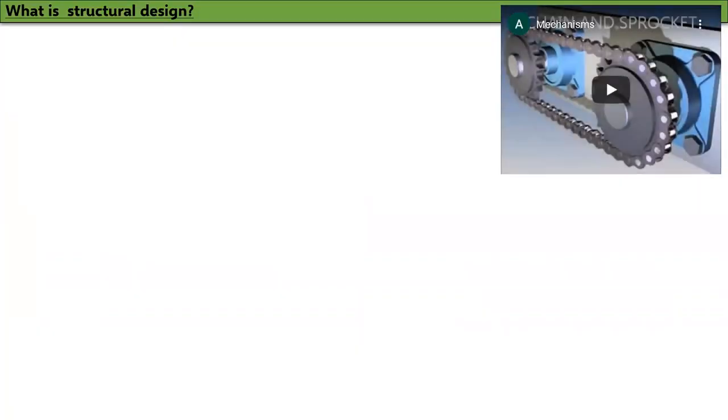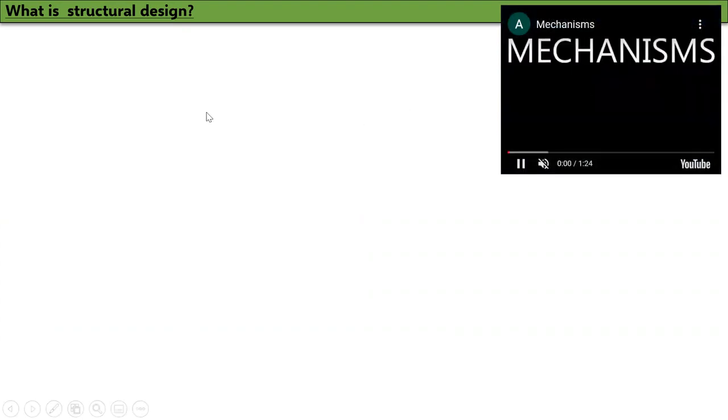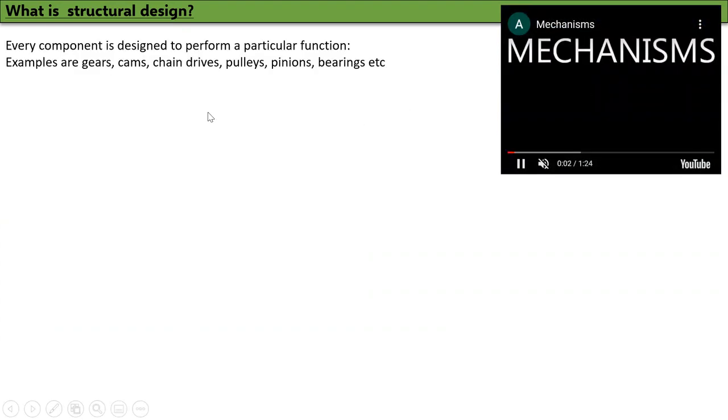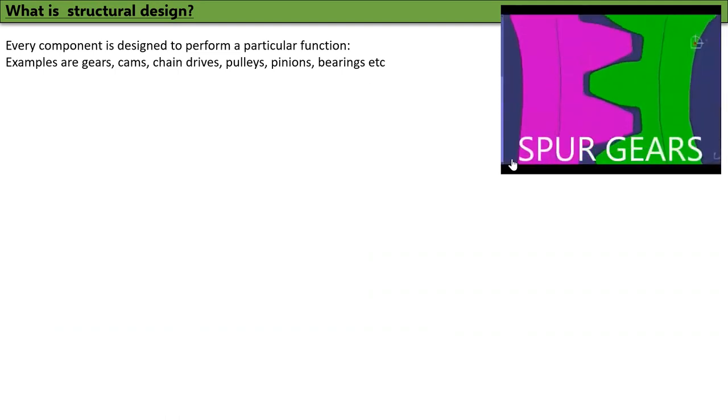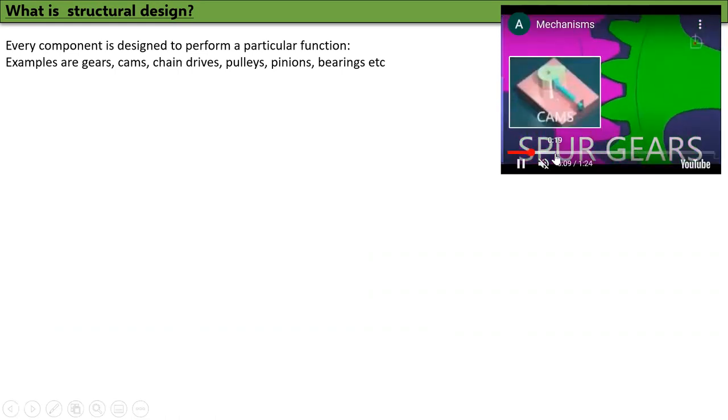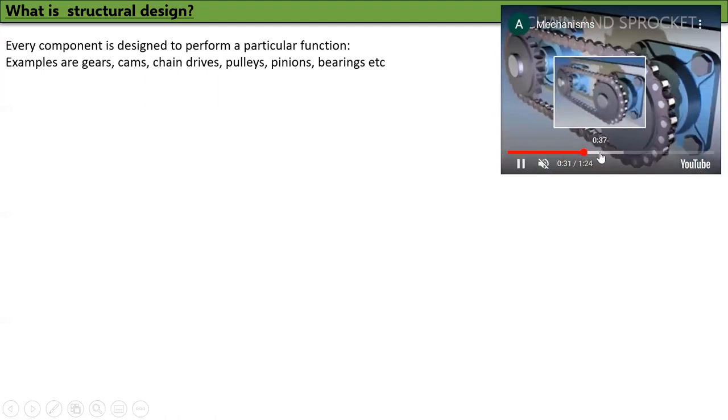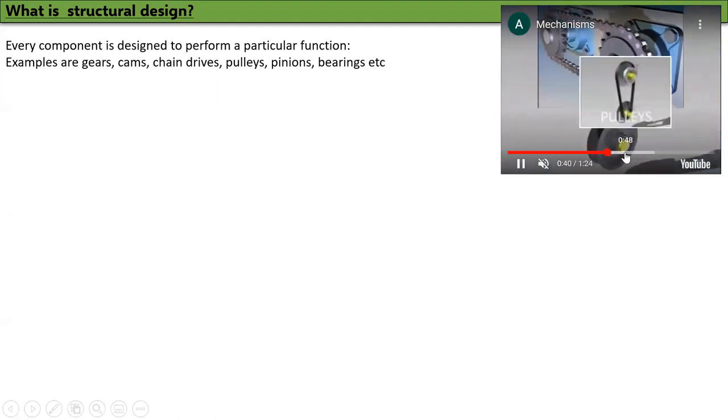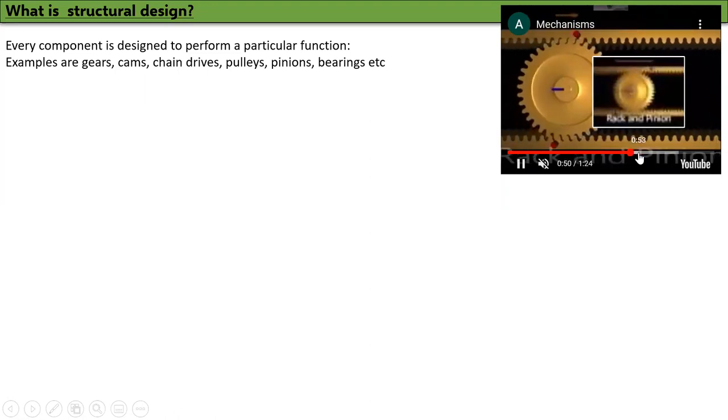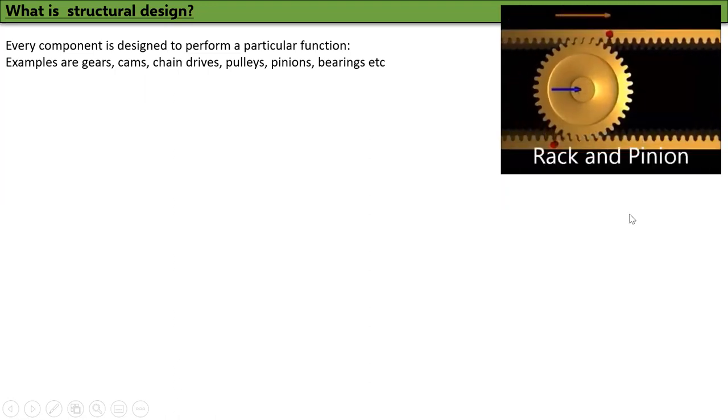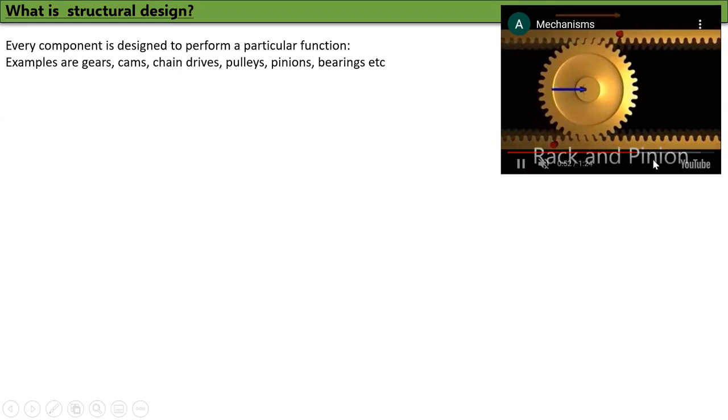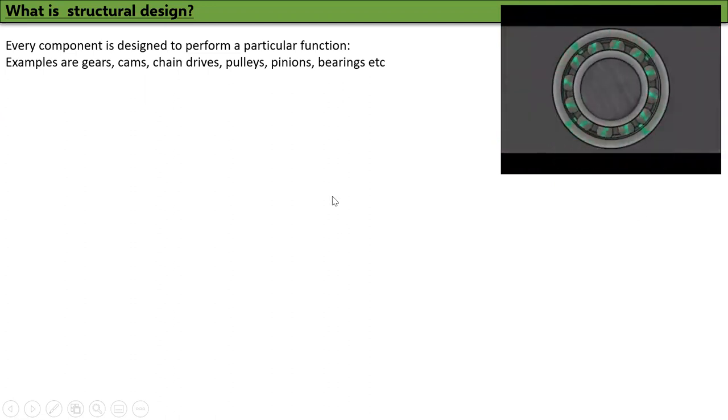Okay, so what is structural design? Every component is designed to perform a particular function. Examples are gears, cams, chain drives, pulley systems, rack and pinion type mechanisms, cars with ball bearings and things like that. All of them are components.